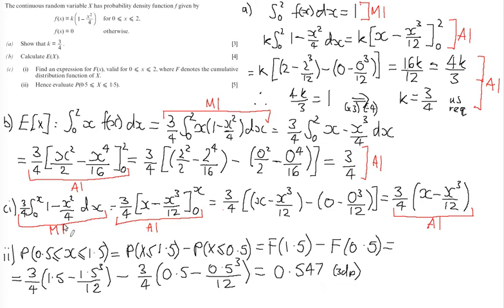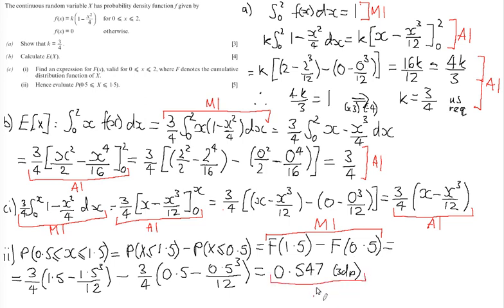There are two marks in this part. The first is a method mark for correctly identifying we use F(1.5) minus F(0.5) from the cumulative distribution function. The second is an accuracy mark for arriving at the answer 0.547. I hope that all made sense.